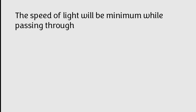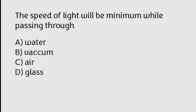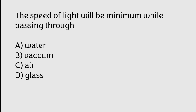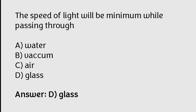The speed of light will be minimum while passing through: water, vacuum, air, glass. The correct answer is Option D. The speed of light will be minimum while passing through glass.